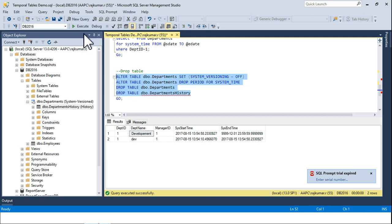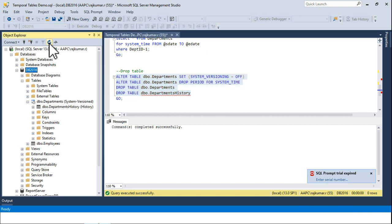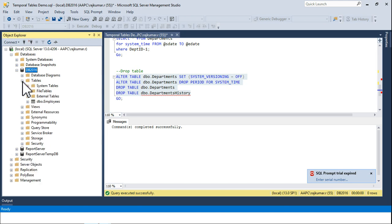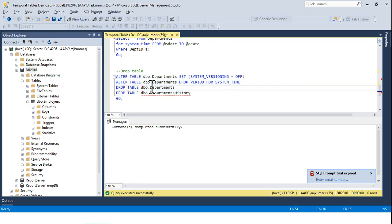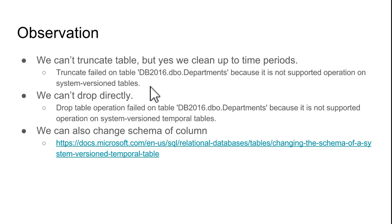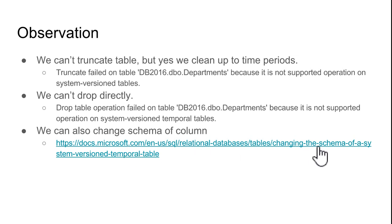I'm going to execute that in one shot. After executing the query, you can now see that the departments table and department history table no longer exist. So those were my basic observations. The third observation is about schema changes - what happens if you change the columns of a table. If you change the schema of the tables, will it store the data? Yes it will, and you can find details on the official Microsoft website.